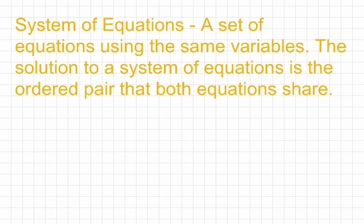Essentially what we're going to have is two equations. Both equations are going to have x and y for their variables, and what we're trying to do is identify the point on a coordinate grid where the two graphs intersect. The point where the two graphs intersect is the answer to our system of equations — that's what we're trying to identify.